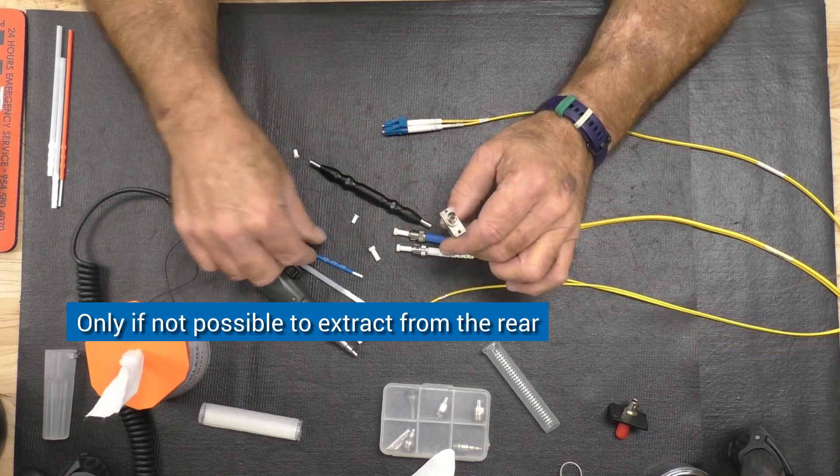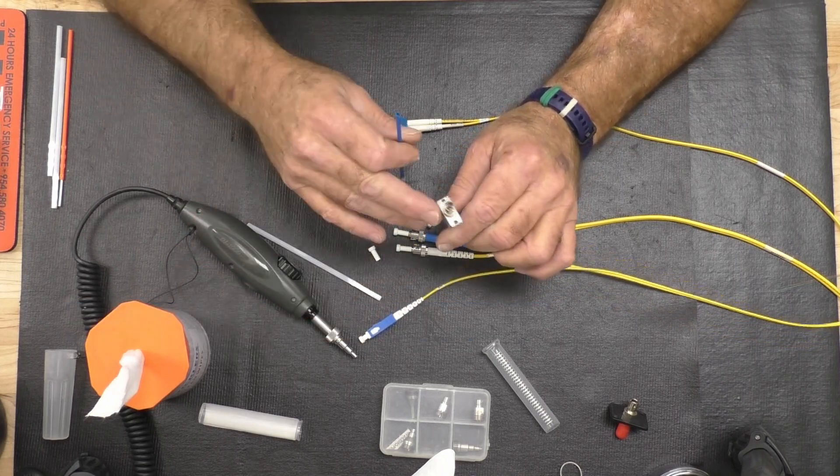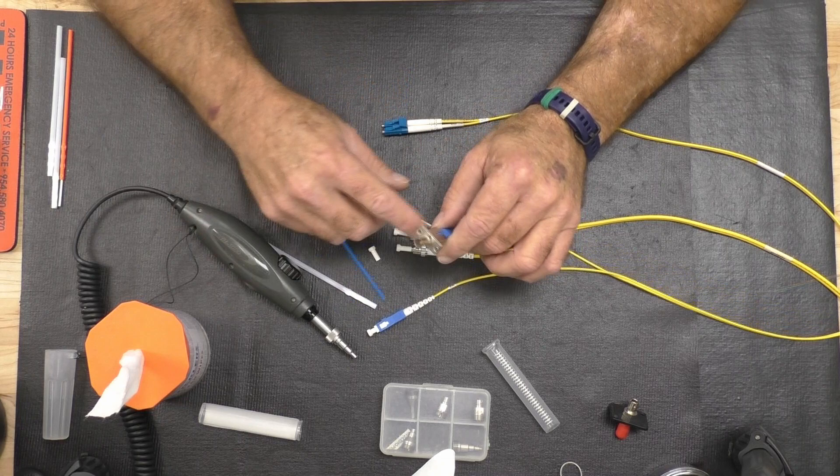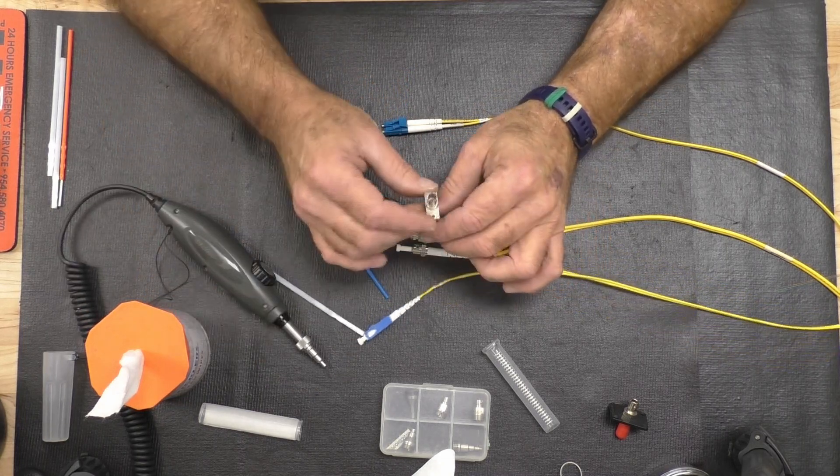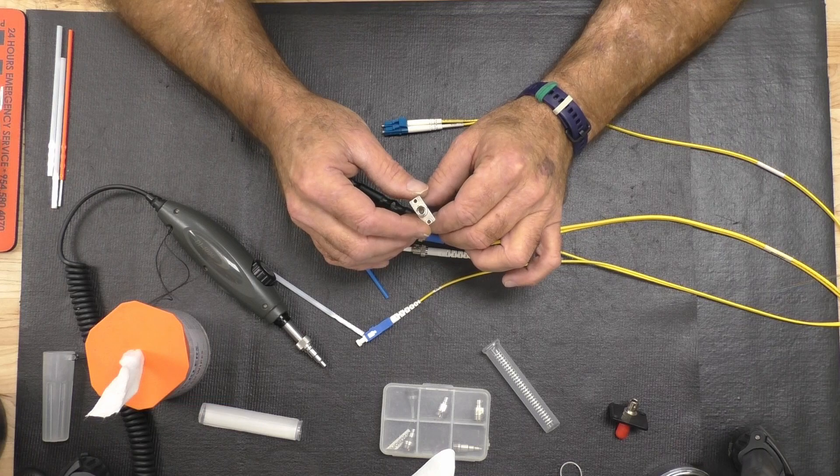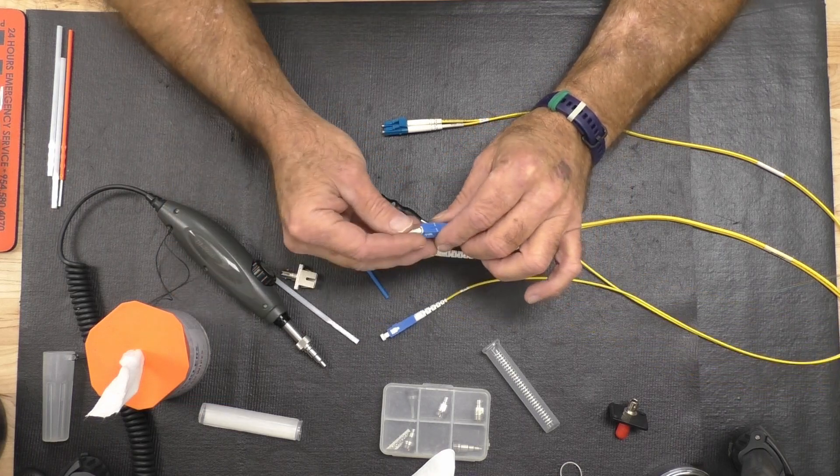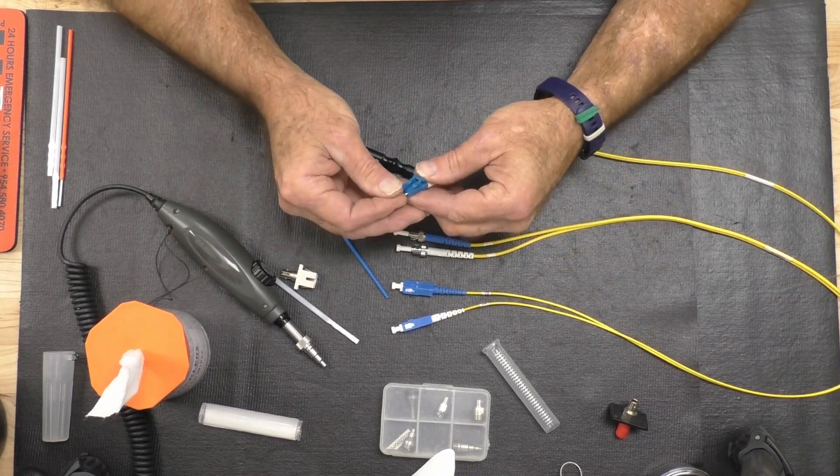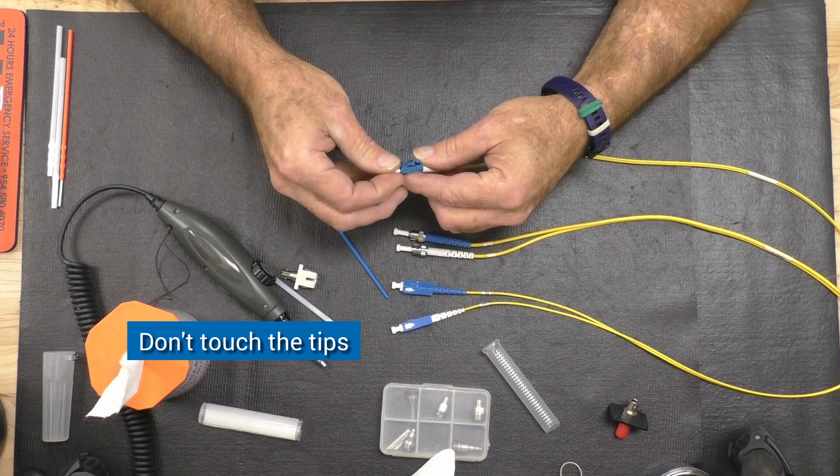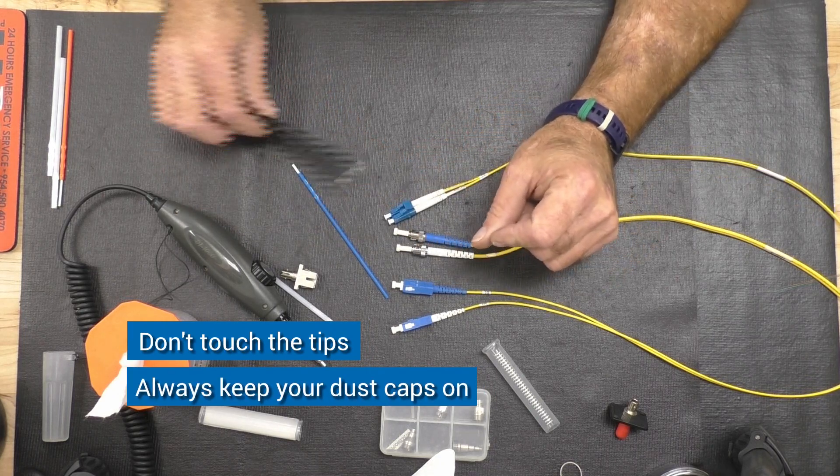So you will periodically have to reach down through the surface of the contact, the female in this case. And of course, they make tips that allow you to visually inspect the surface of the contact while it's inside the receptacle. Those are the basic procedures for cleaning contacts. Now, you won't have to clean them if you just don't touch them and always keep the dust caps on.